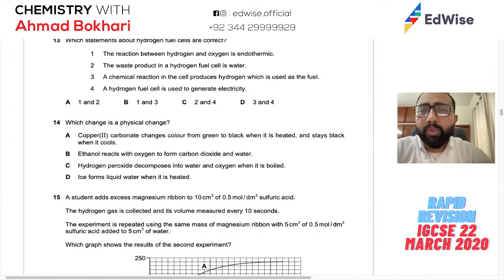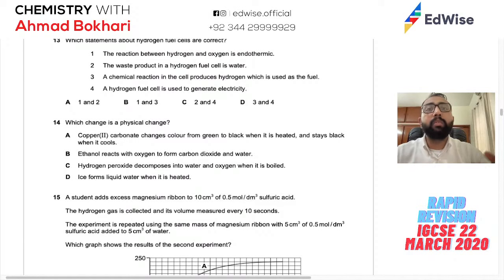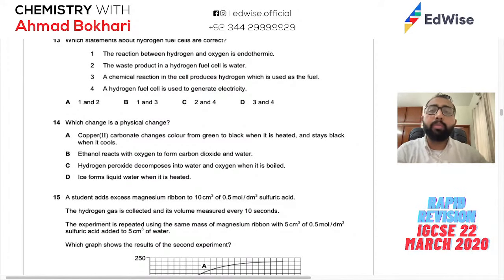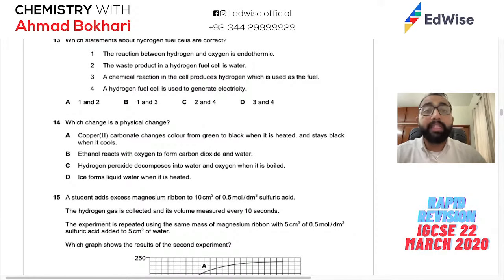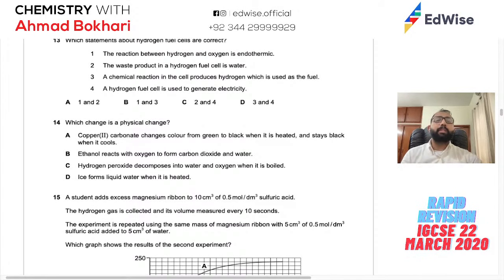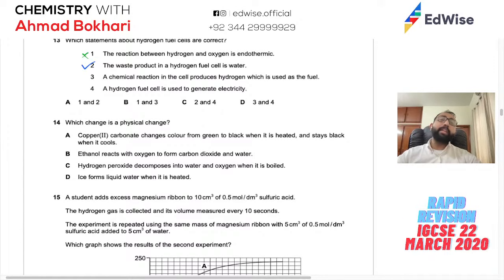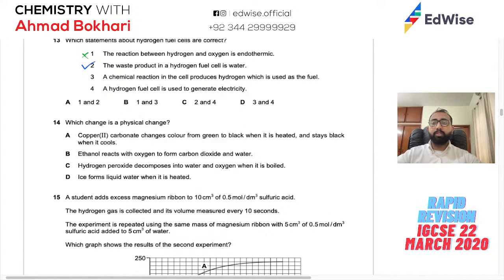Question 13: Hydrogen fuel cells — this appears in almost every IGCSE paper. The reaction of hydrogen and oxygen is exothermic, not endothermic (so statement A is wrong). The waste product is water — making it clean. Hydrogen is brought in as fuel from outside, not produced inside the cell. The fuel cell generates electricity. Correct statements are 2 and 4: waste product is water, and it generates electricity.